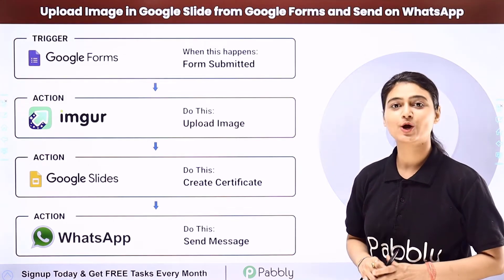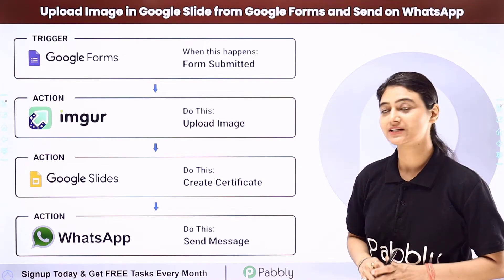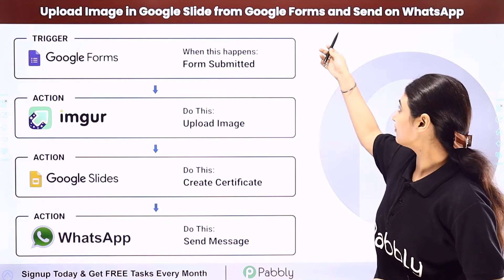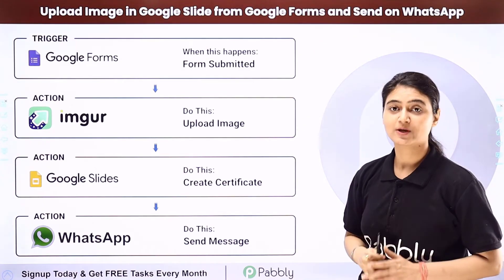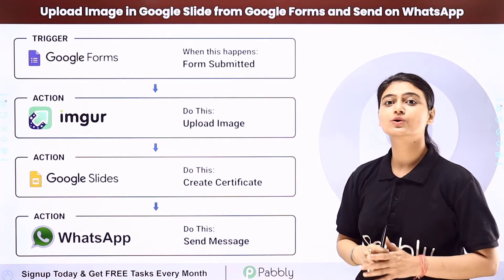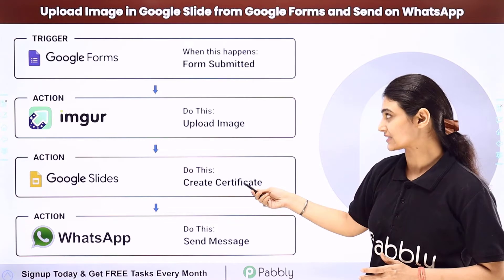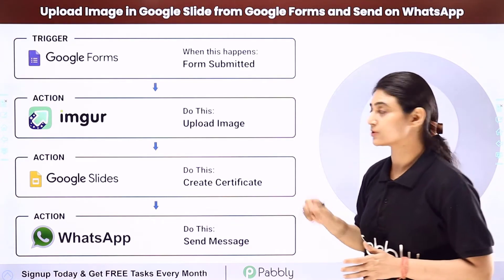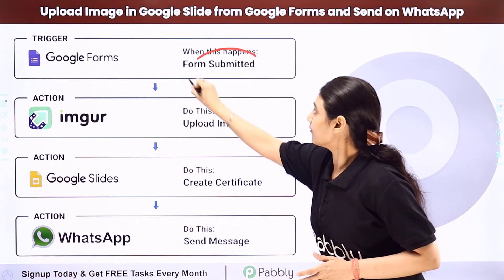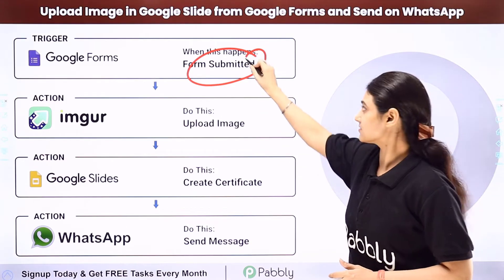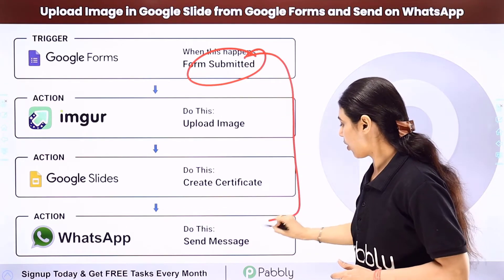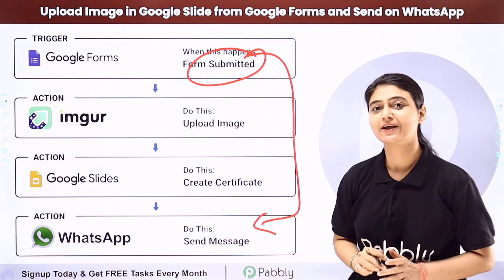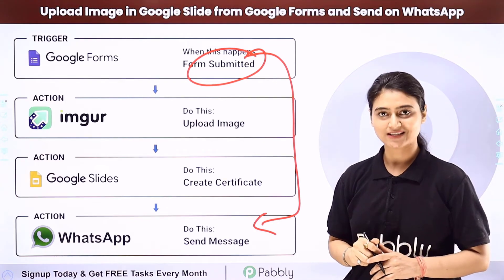In this video we will learn how you can automatically upload an image in Google Slides from Google Forms and send it on WhatsApp. We want to create a certificate on Google Slides using information, details, and pictures from Google Forms and then send the certificate on WhatsApp. We are going to automate this entire process using Pabbly Connect.